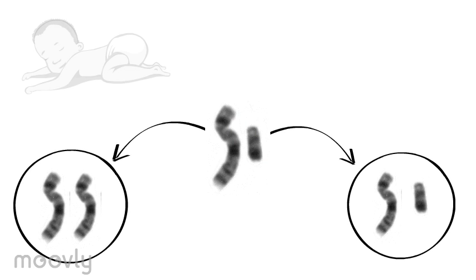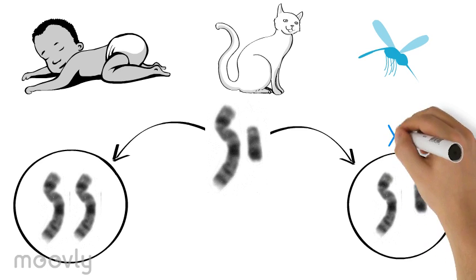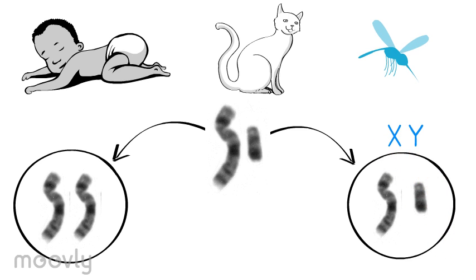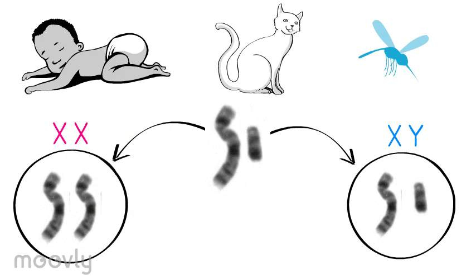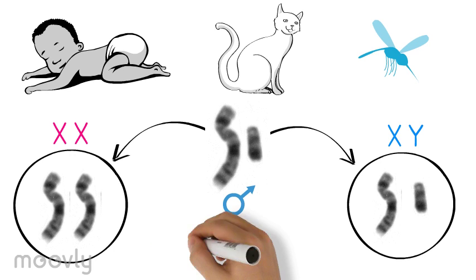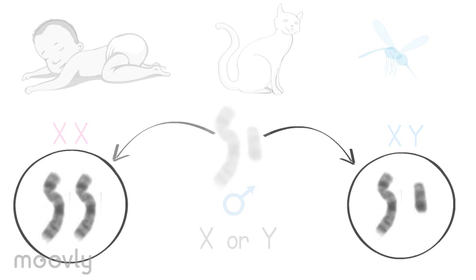In humans, other mammals, and many insects, the male has an X and a Y chromosome, while the female just has two X chromosomes. Therefore, the male is the heterogametic sex, and ultimately the sex of the offspring depends on whichever sex chromosome the sperm cell is carrying.